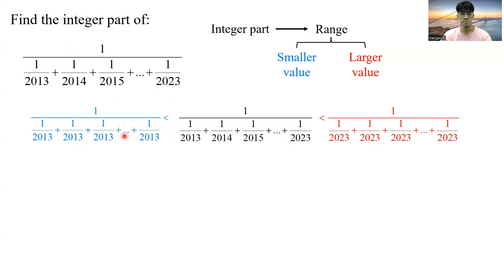So how do I compute this? I have 11 1 over 2013 in the denominator. So this will simply equal 183. Now this is also fairly easy to calculate. This is just 183 and 10 over 11. So from here, we know that this fraction fall between 183 and 183 and 10 over 11. So the integer part of this fraction is 183.